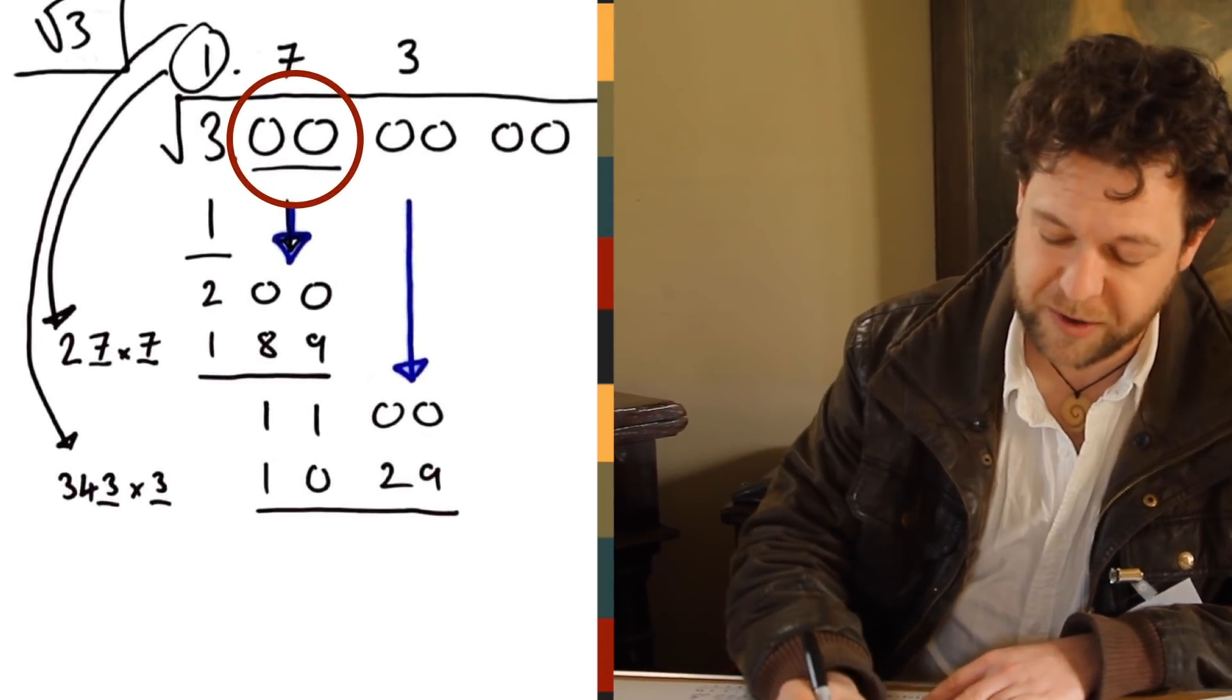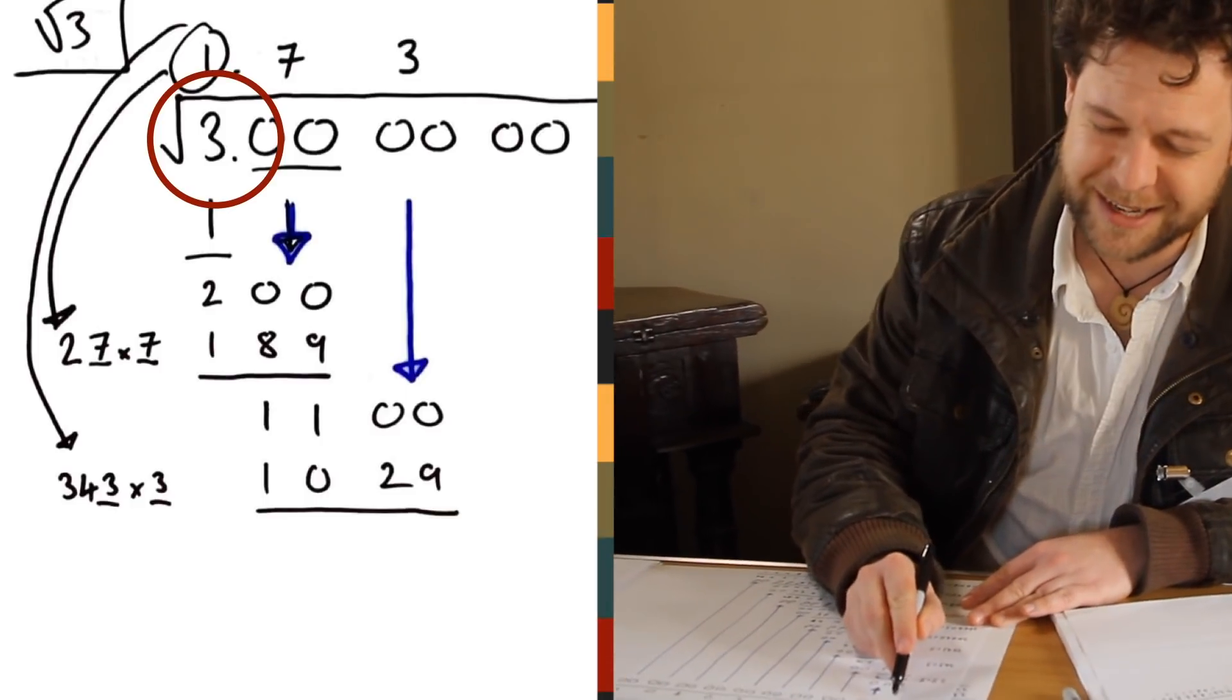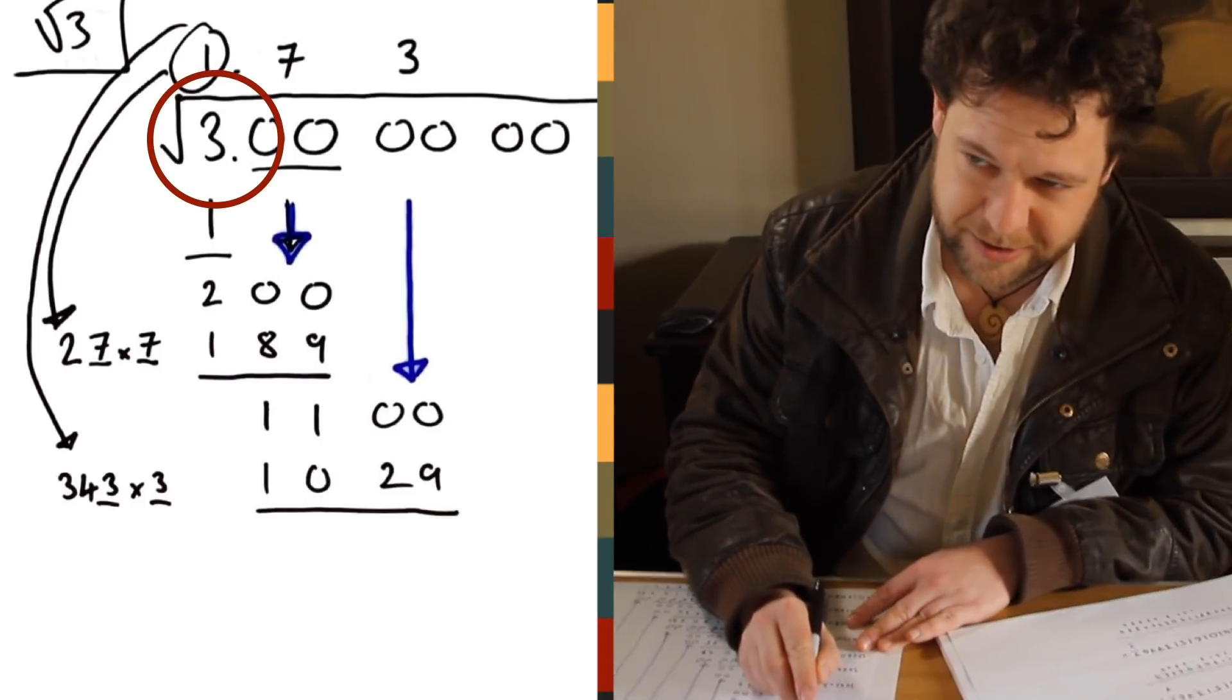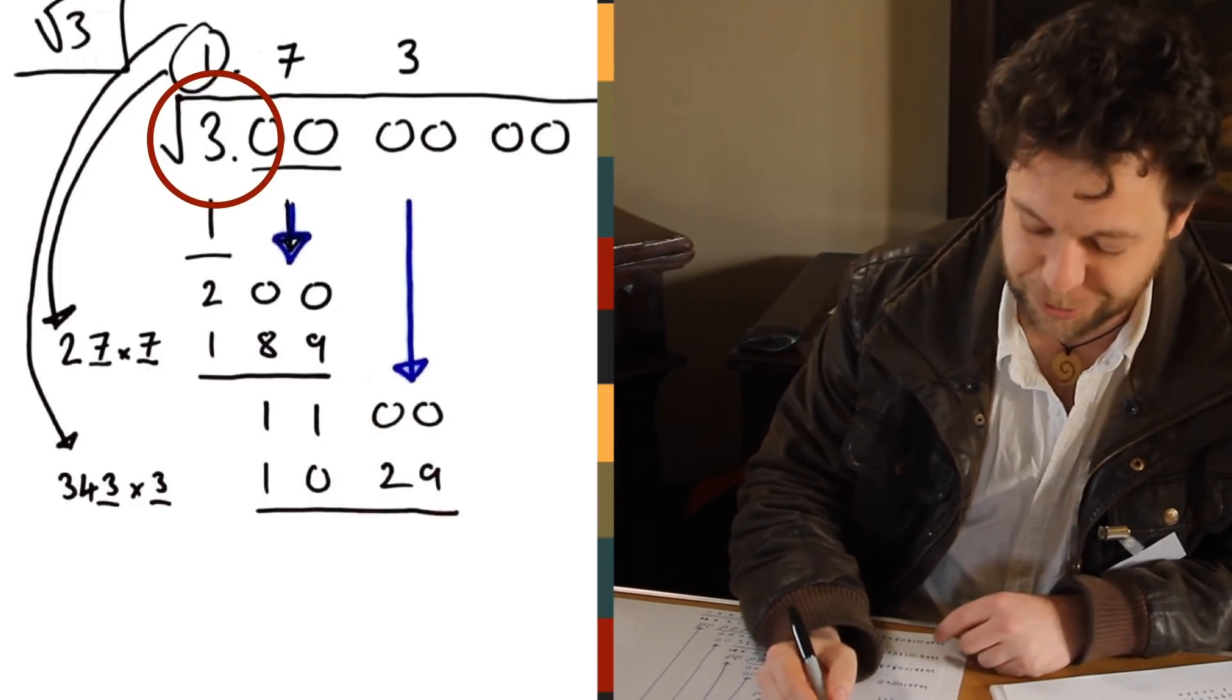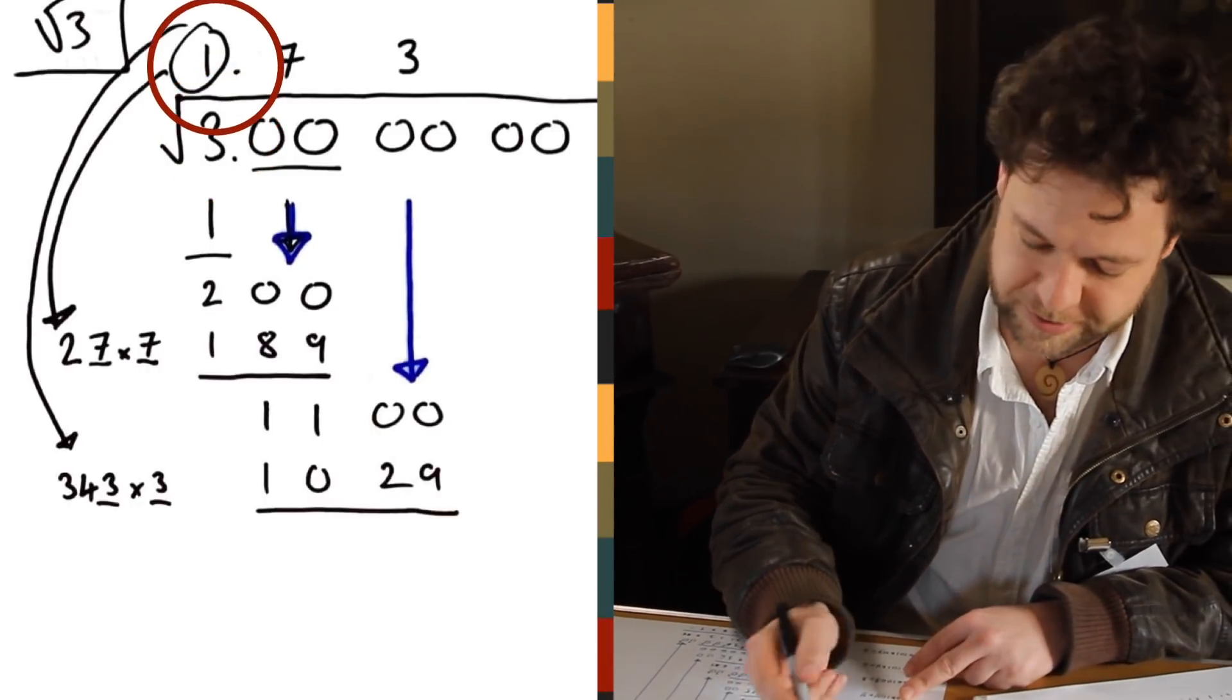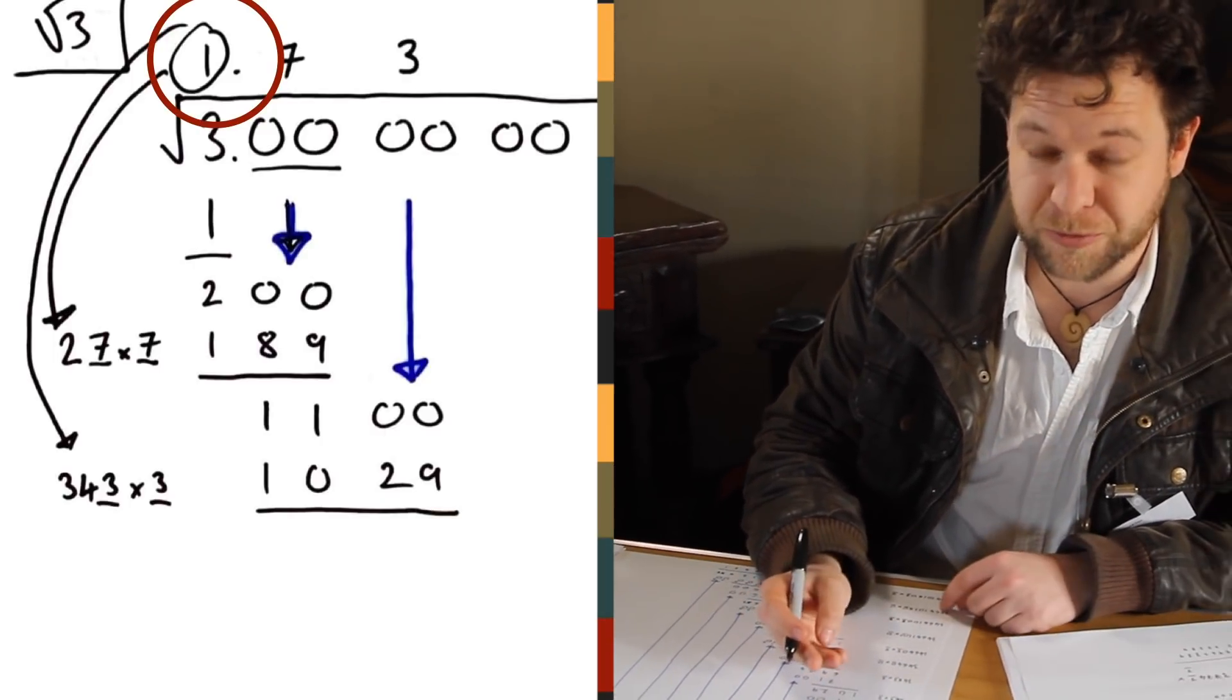You find a number that fits into the first digit. We have a 3 here, we need to find a number that squares into 3 and doesn't go over it. If you try and square 2, you get 4, that's too big, so all we're left with is 1 squared is 1. So we write down 1 as our first digit, and that's the beginning of the square root of 3.